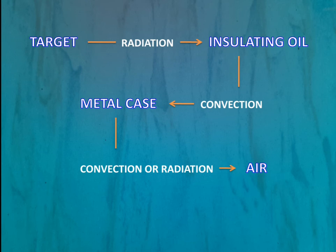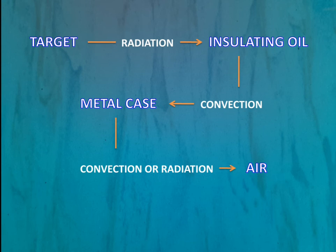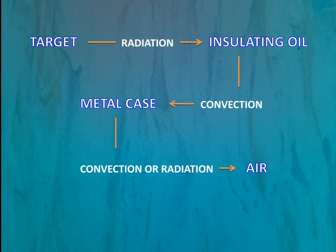Looking at this flow chart: from the target area, heat is transferred to the insulating oil by means of radiation. We know the glass envelope is placed inside a lead case filled with insulating oil, which acts as both a coolant and electrical insulator. From the insulating oil, heat is transferred to the metal case or lead case by convection. From the metal case, heat is then transferred to air by convection or radiation.